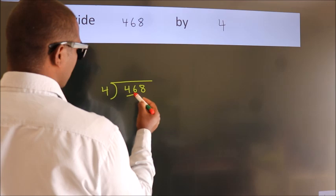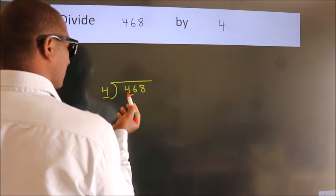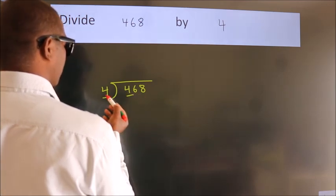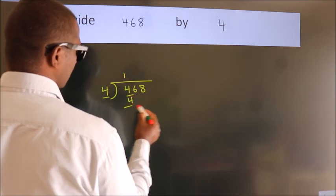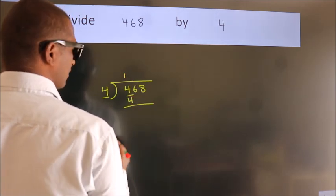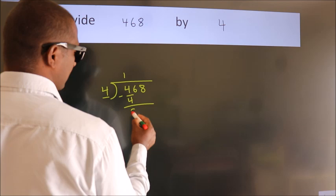Here we have 4, here 4. When do we get 4? In the 4 table. 4 once is 4. Now we should subtract. We get 0.